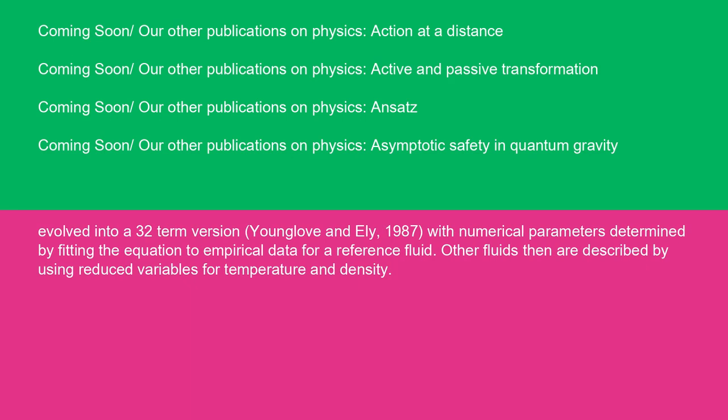The mBWR equation subsequently evolved into a 32-term version (Younglove and Ely, 1987) with numerical parameters determined by fitting the equation to empirical data for a reference fluid. Other fluids then are described by using reduced variables for temperature and density. Thank you.